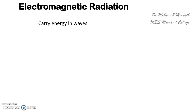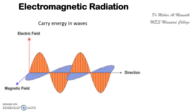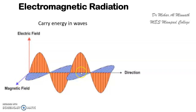If we represent electromagnetic radiation diagrammatically, it appears as waves which have an electric field component and a magnetic field component. This electric field and magnetic field are perpendicular to each other, and they are also perpendicular to the direction of the wave — that is the direction of propagation.